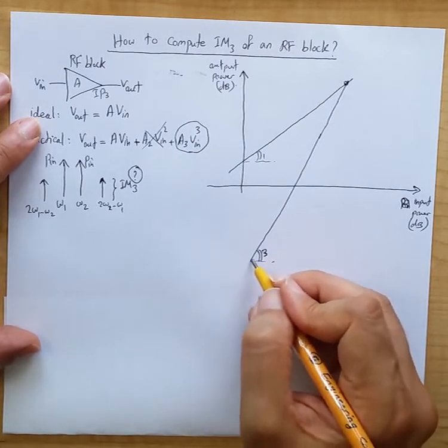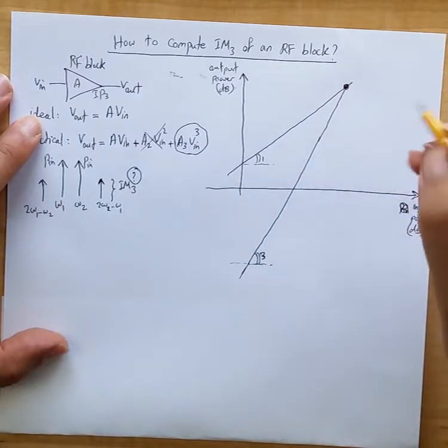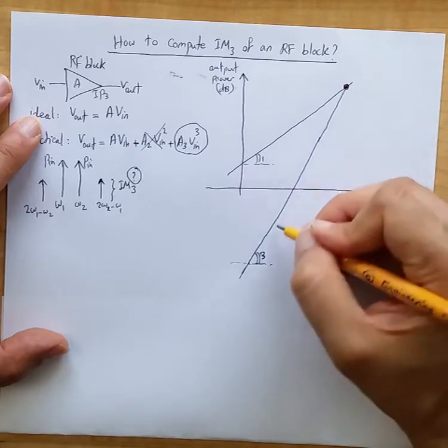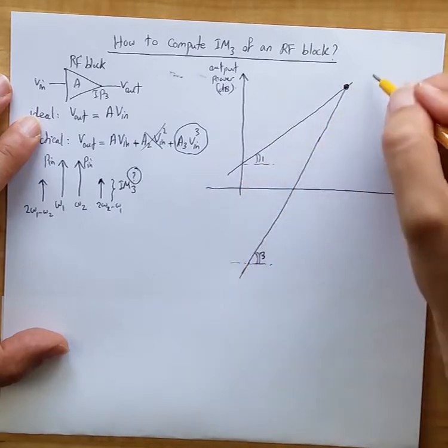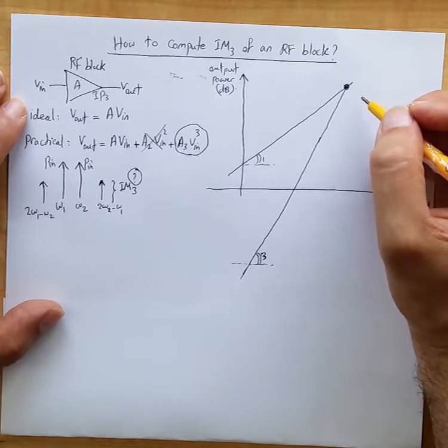The tangent of this line is 3. Now, there is a hypothetical point where this component would intercept with the ideal output main harmonic.